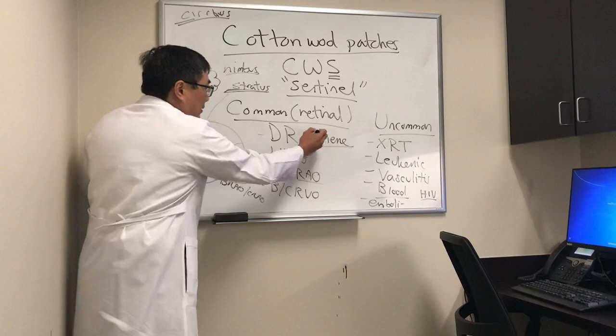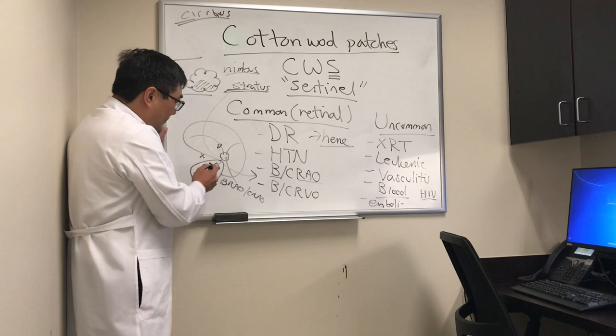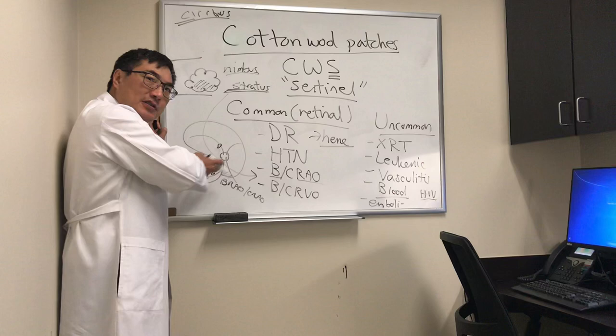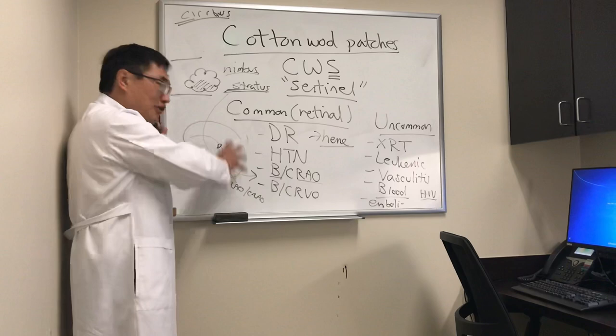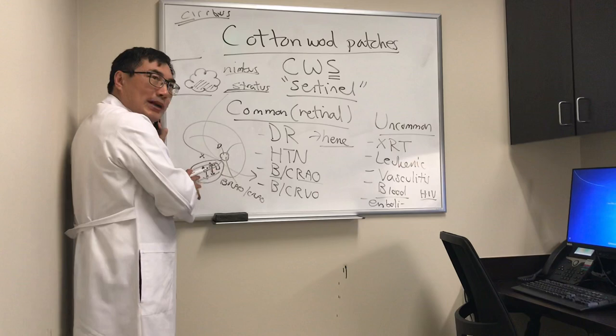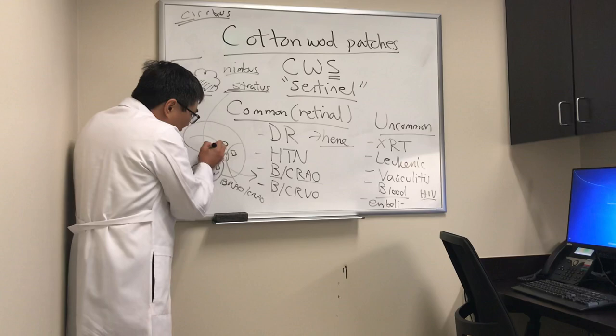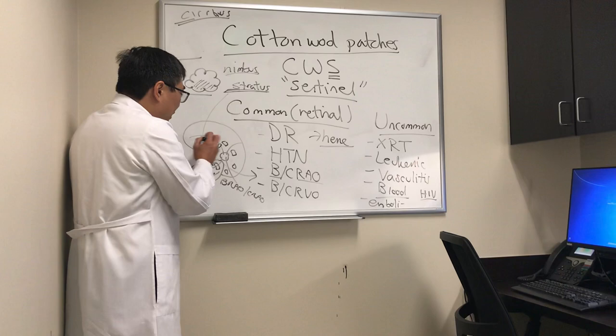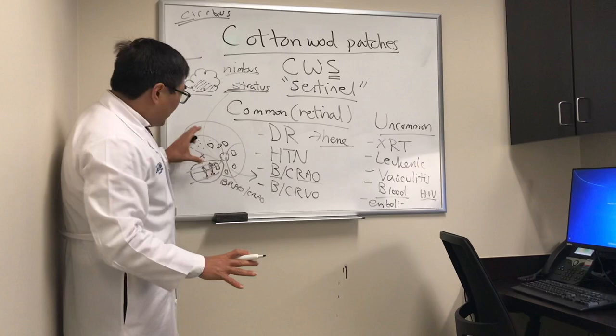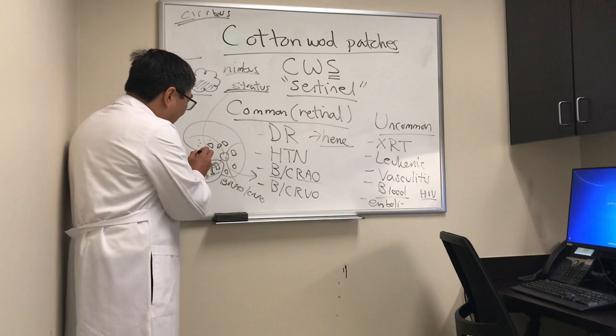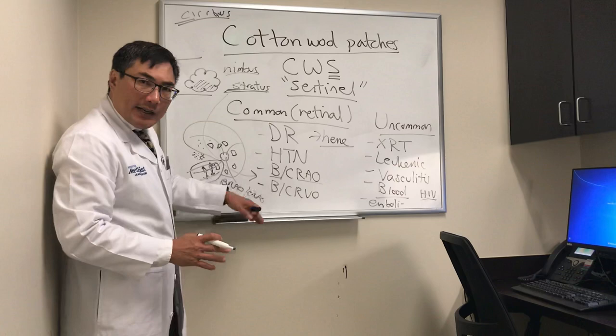In vein occlusions we're going to see nimbus — the hemorrhage — because the vein is leaking blood products. It'll be along the vein with flame hemorrhages in branch retinal vein occlusion, or diffusely in central retinal vein occlusion. So hemorrhage along the vein with cotton wool patches indicates vein occlusion. The pattern is defined by the company it keeps.